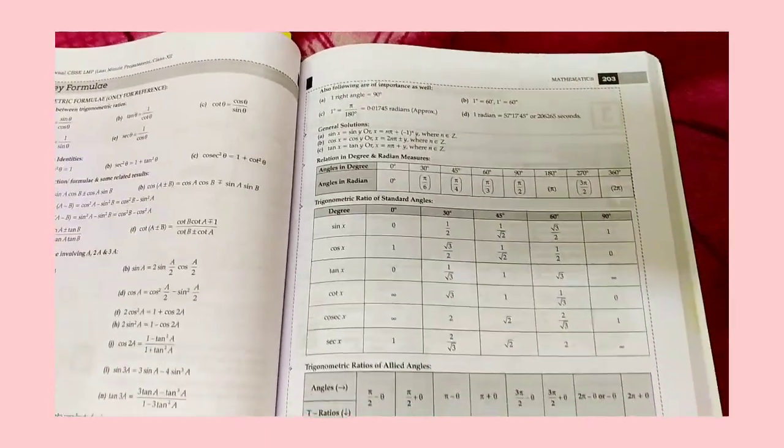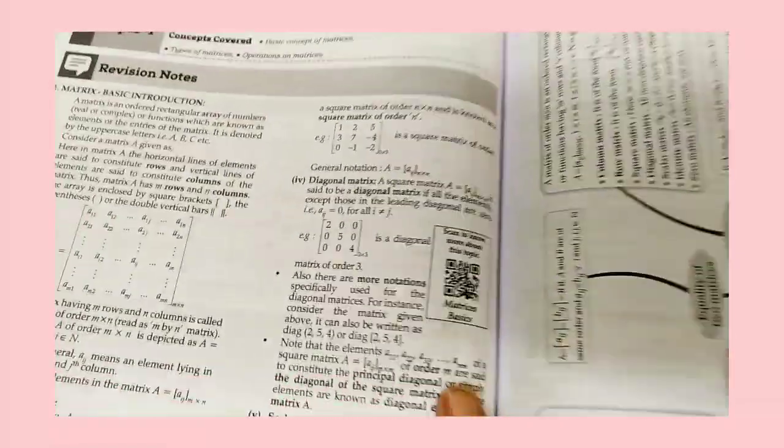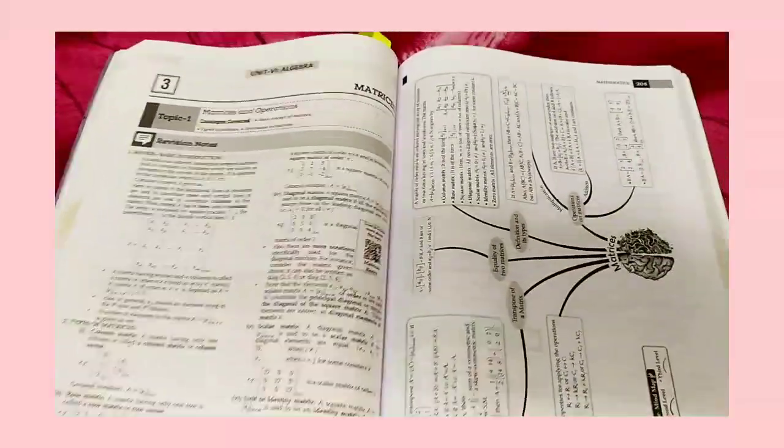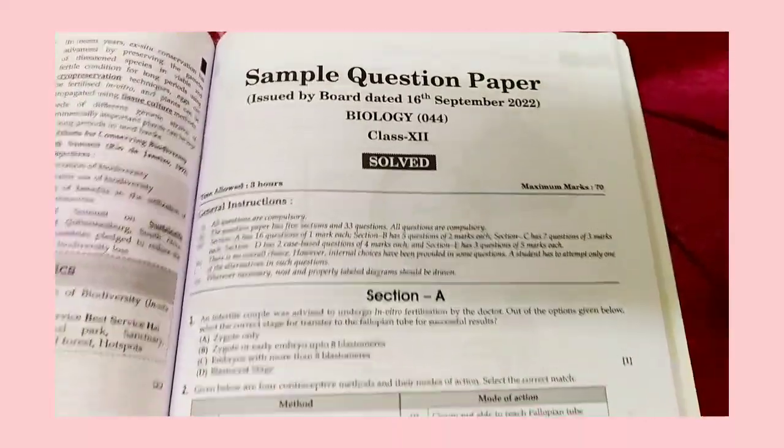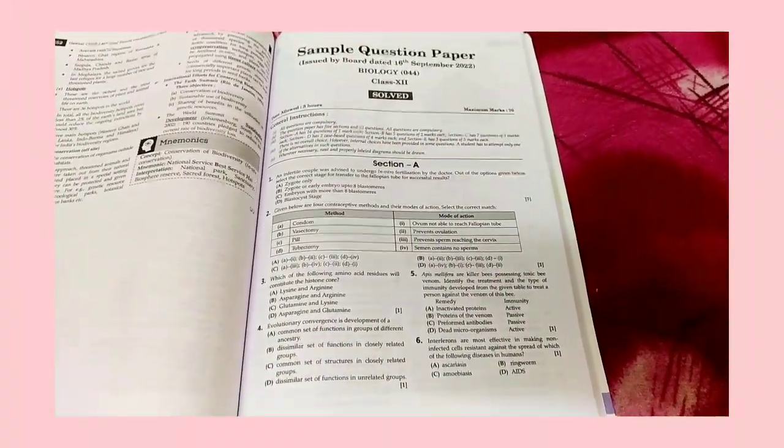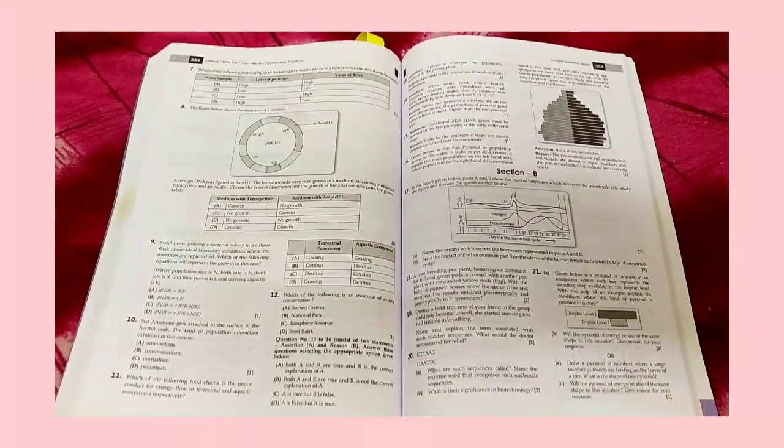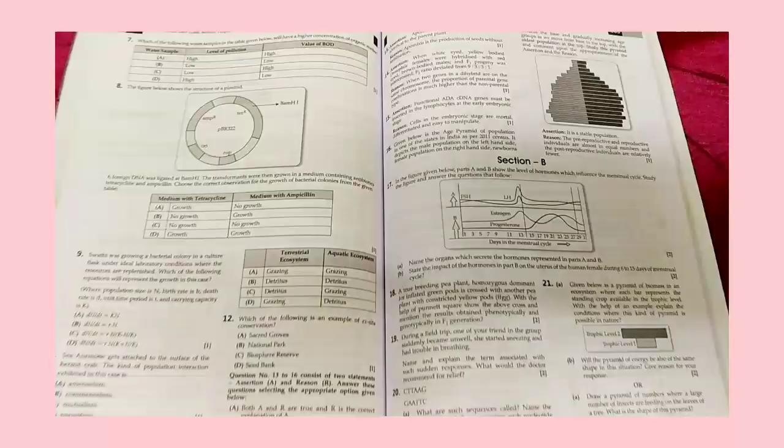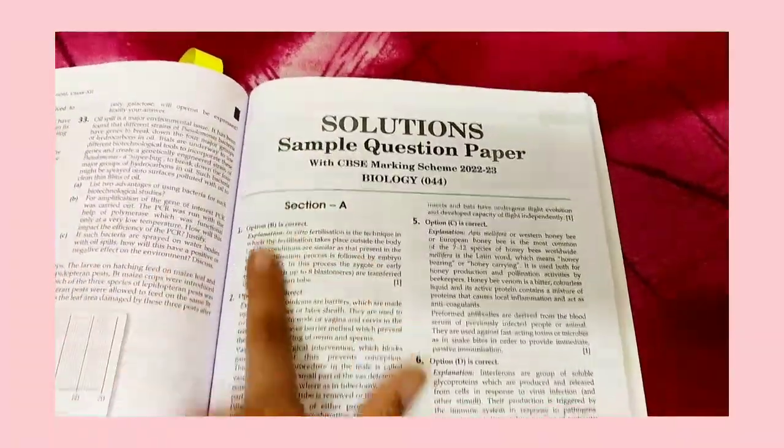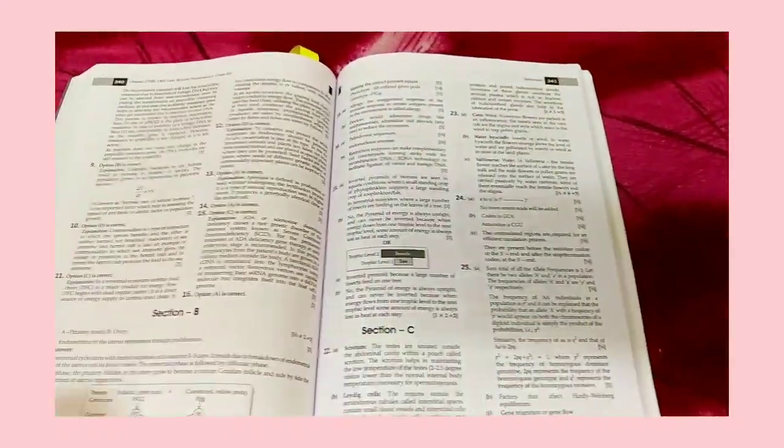So guys, they also come with QR codes through which we can scan to grasp more information about the particular topic. They also have solutions of CBSE sample question papers of this year, and this book contains solutions for each subject like physics, chemistry, maths, biology, and English.